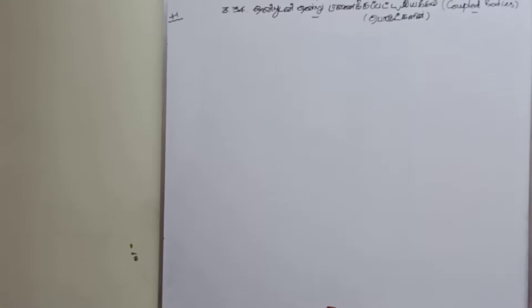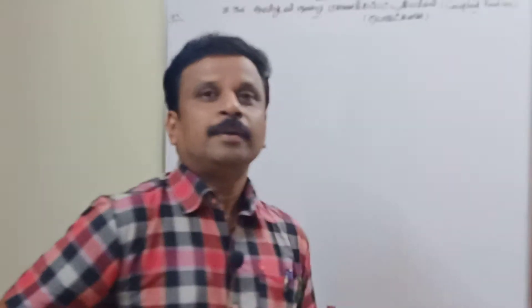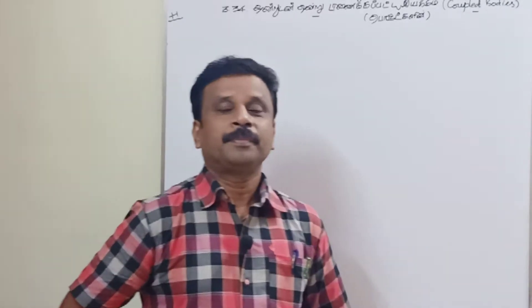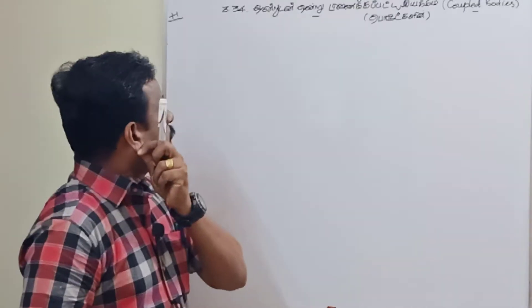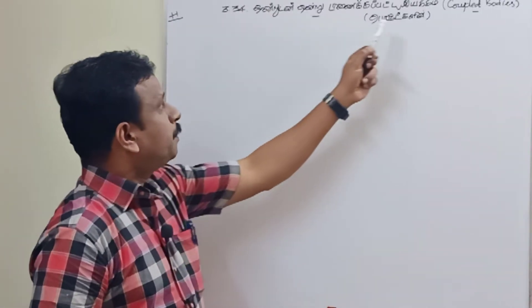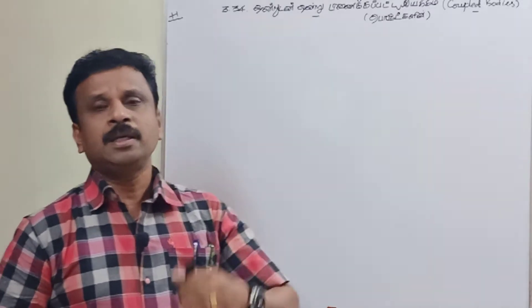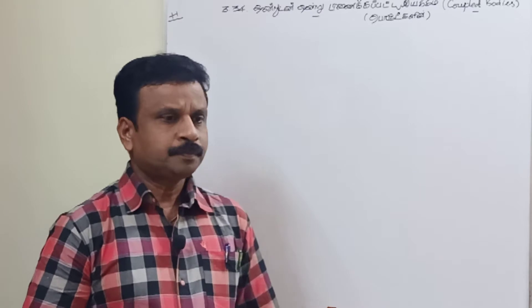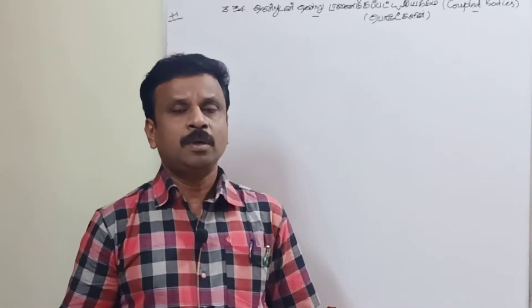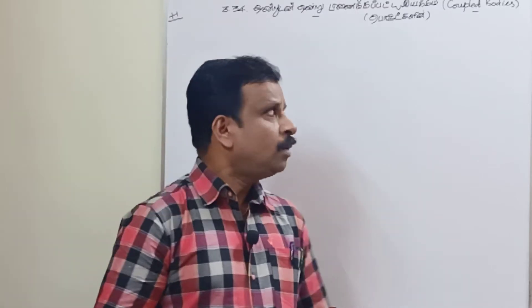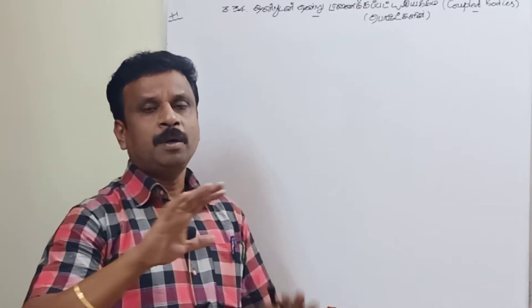Hi dear students, welcome to this session. In the previous video we discussed motion of coupled bodies — specifically the vertical motion. For that case, the common acceleration of the system was (m1 minus m2) divided by (m1 plus m2) into g, and the tension was 2·m1·m2 divided by (m1 plus m2) into g. Now we are going to discuss the horizontal motion.